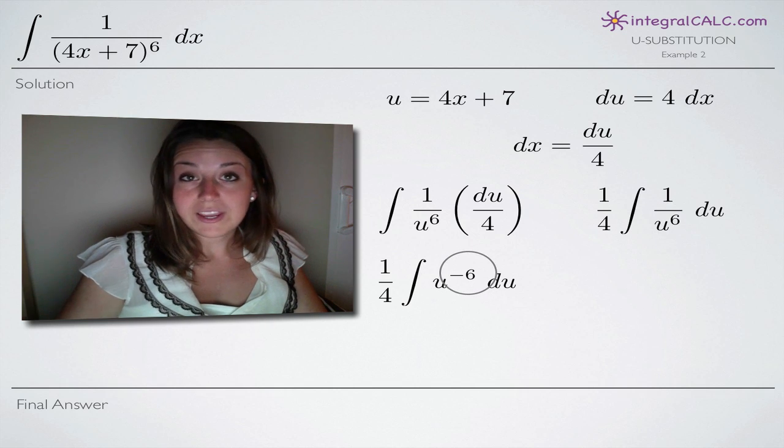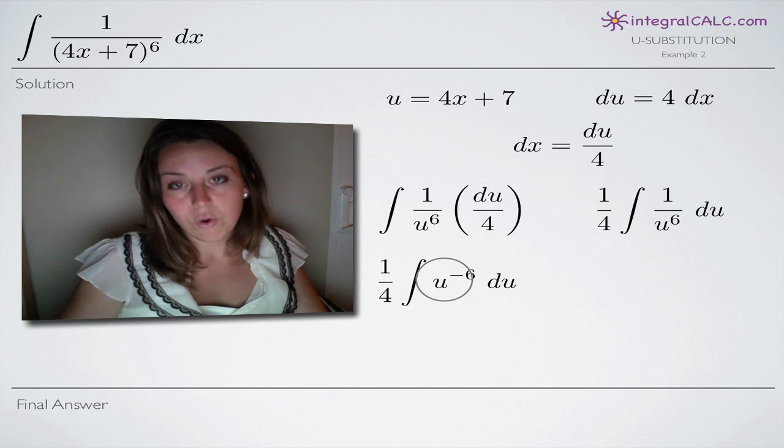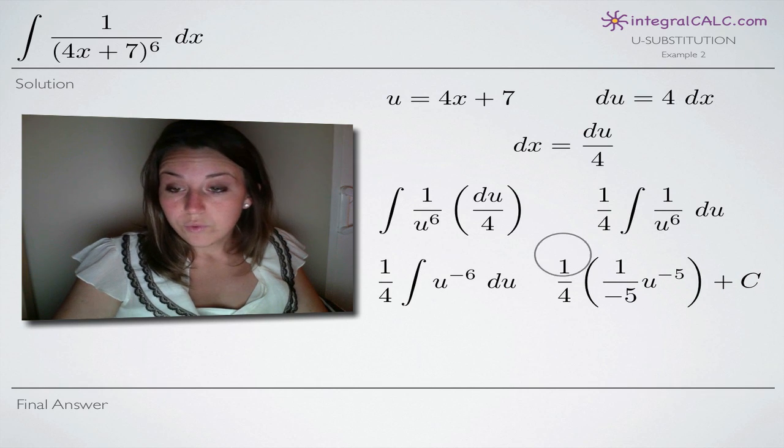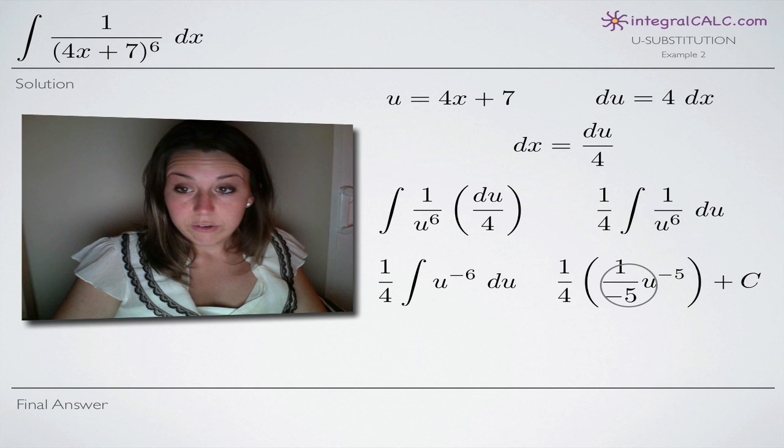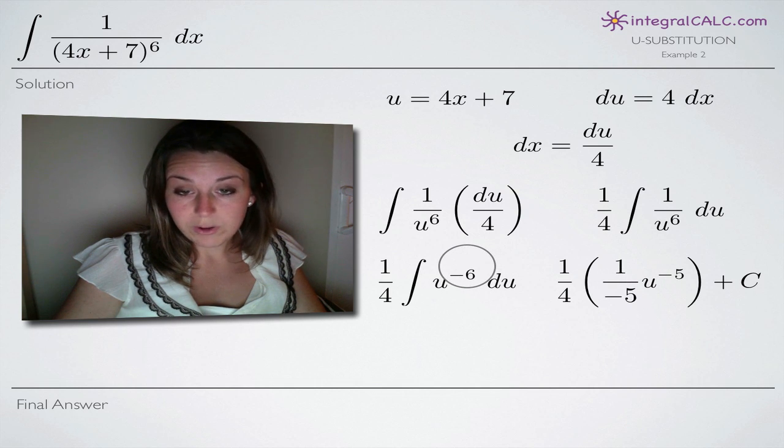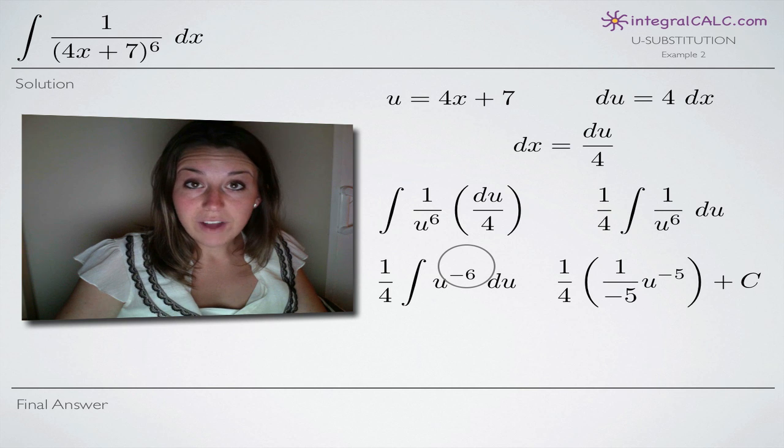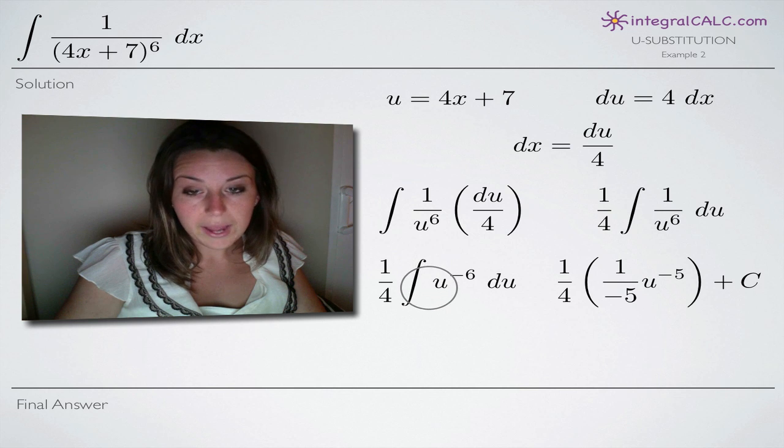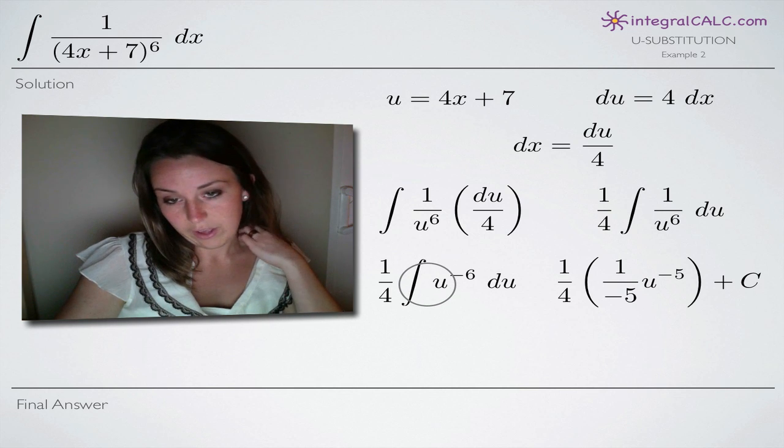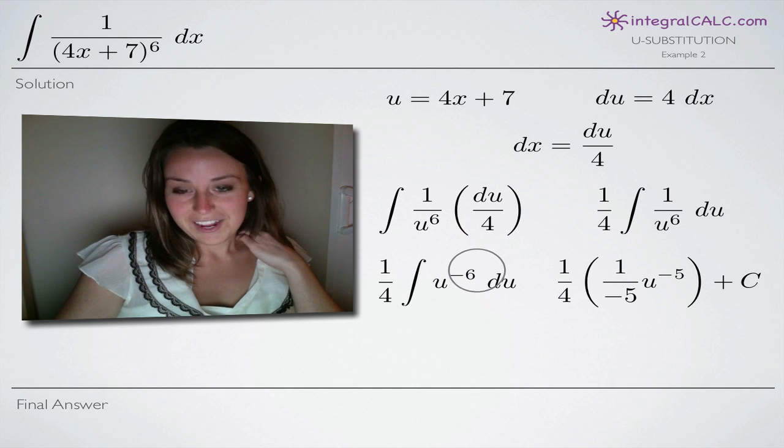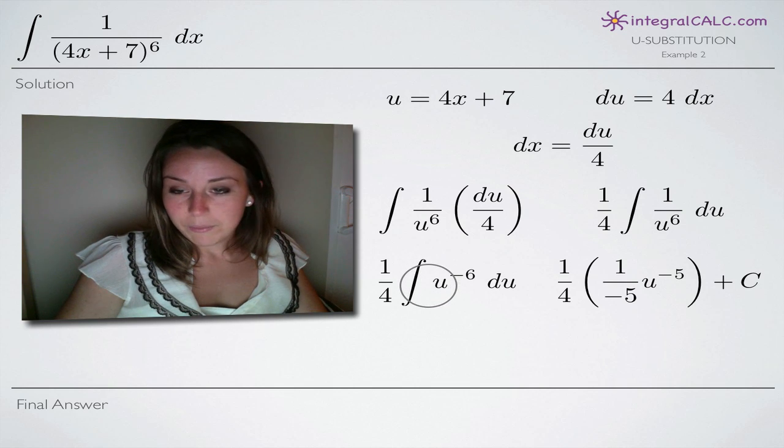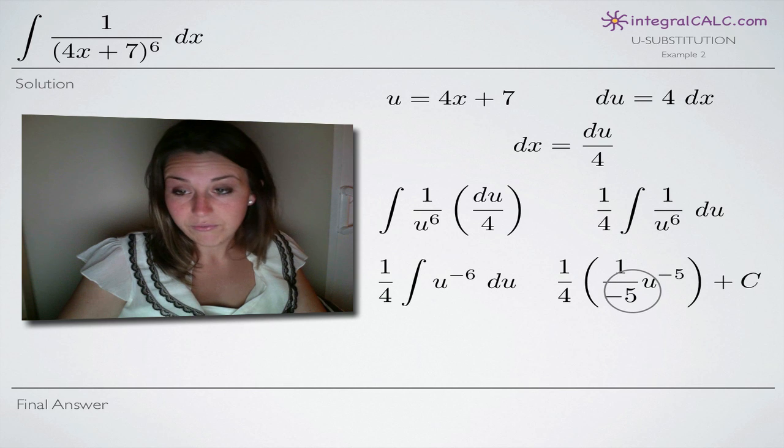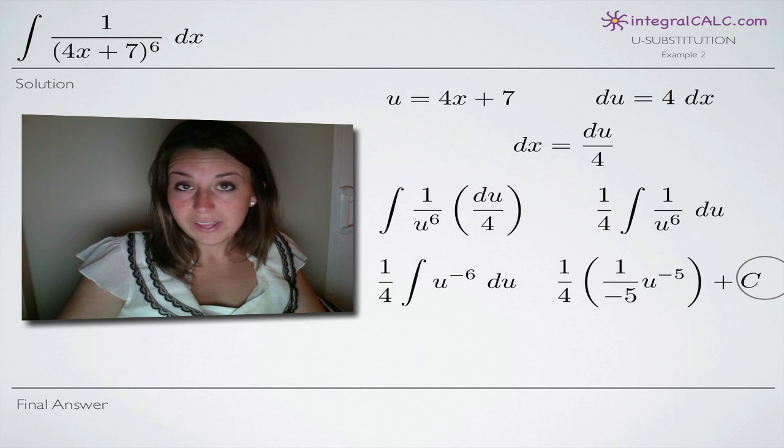Now we can integrate by adding 1 to the exponent and then dividing our coefficient by the new exponent. We'll leave the 1 4th out in front and to integrate, we add 1 to our exponent so negative 6 plus 1 is a negative 5. So 1 is the implied coefficient and we divide that by the new exponent which is negative 5, so we end up with 1 divided by negative 5. Don't forget to add c to account for the constant of integration.